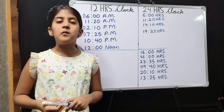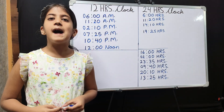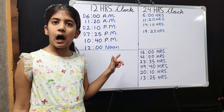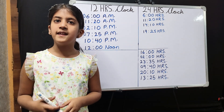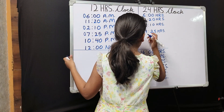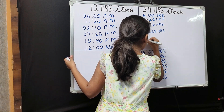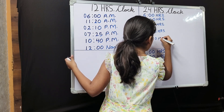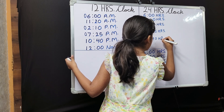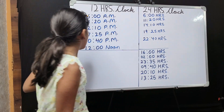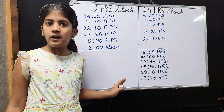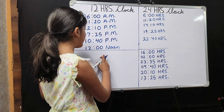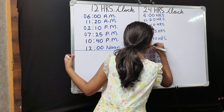10:40 PM. In 10:40 PM, I will just add 12 to 10 and write 40 as it is and put hours. So 10 plus 12 is 22. My answer is 2240 hours. 12 noon. In 12 noon, I will just write these digits as it is. So my answer is 1200 hours.